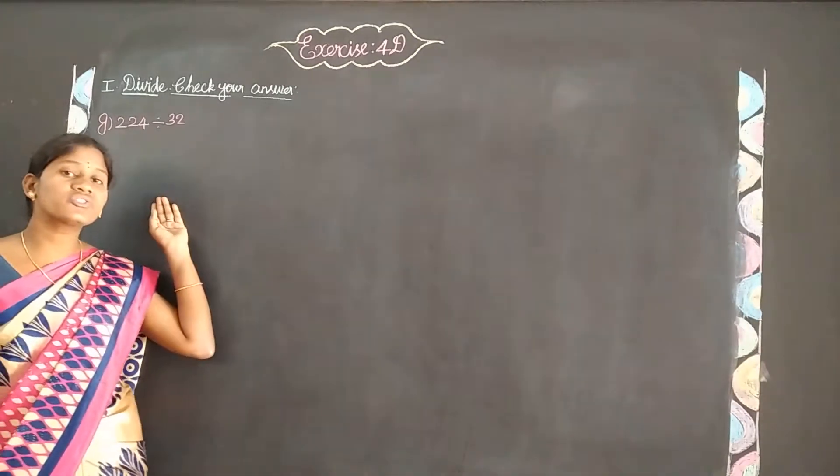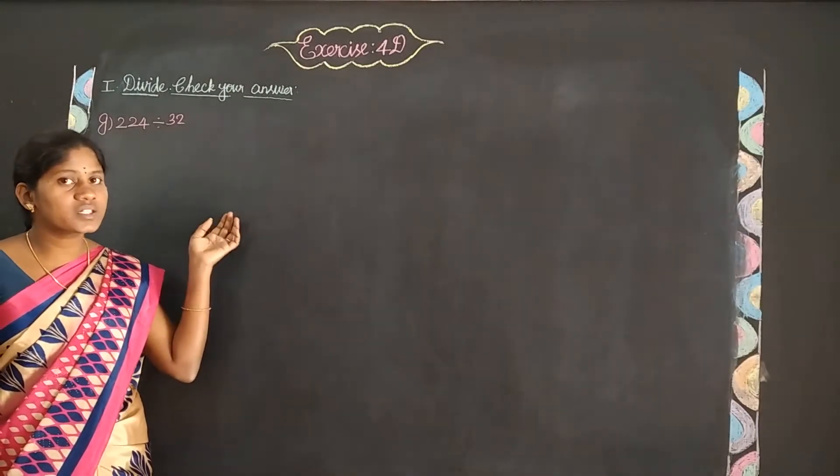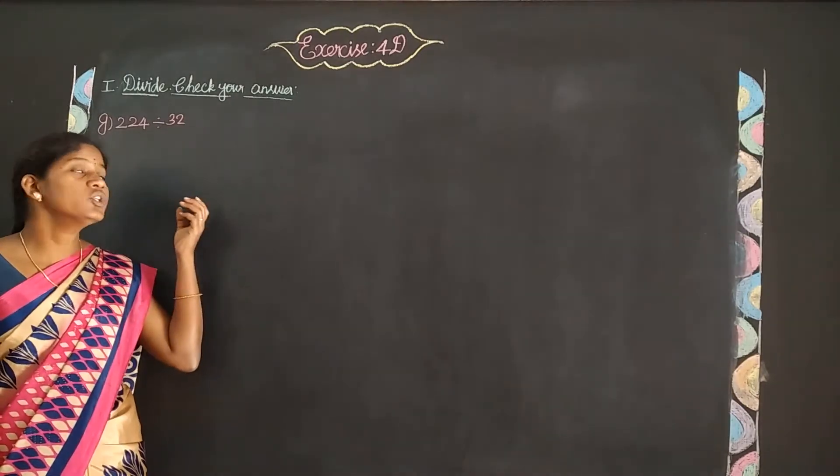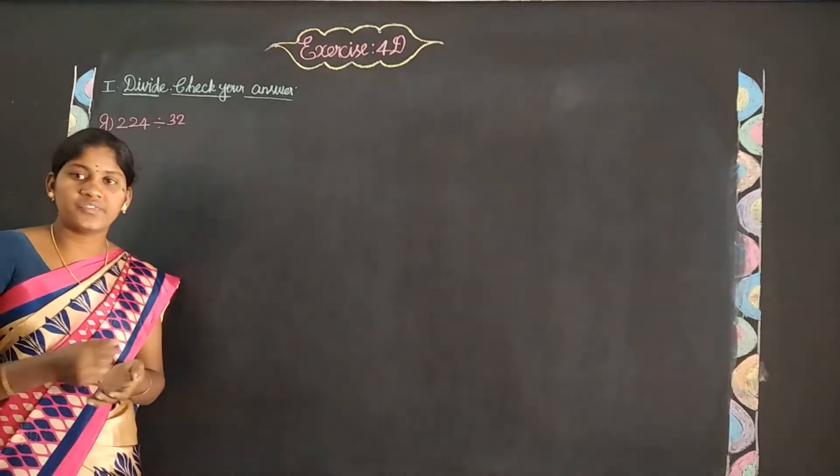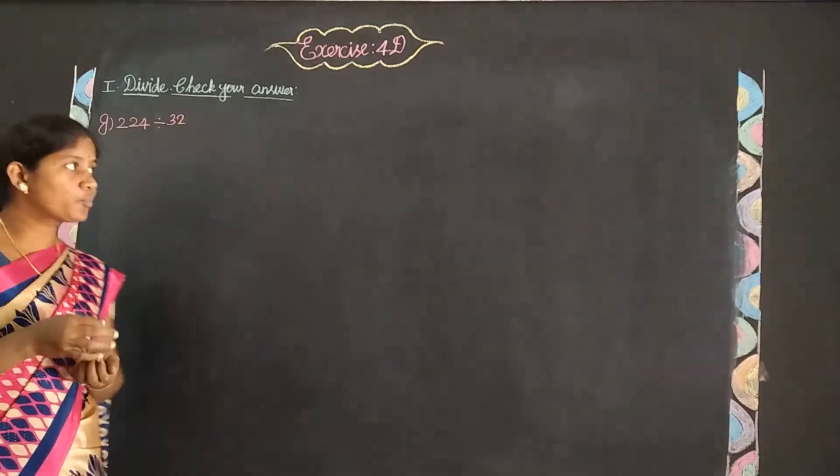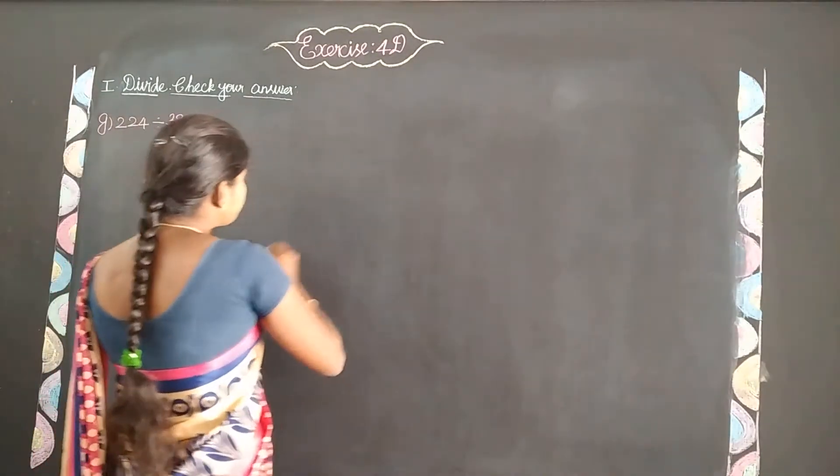Problem: 224 divided by 32. This is a two-digit division. First, we will write the multiplication table.